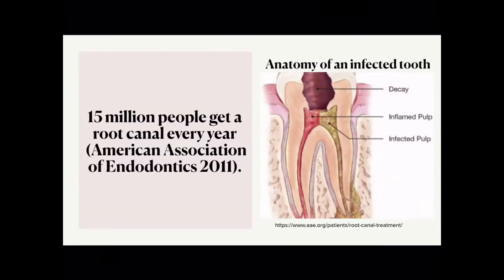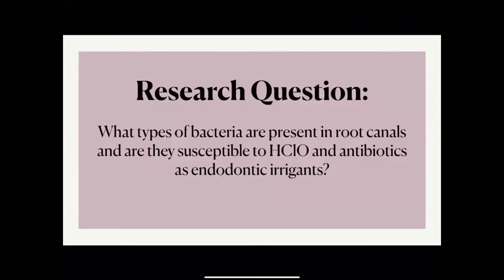This image shows the anatomy of an infected tooth. Here you can see two different roots — one with infected pulp tissue and the other with inflamed pulp tissue. This is a tooth in need of a root canal. My research question is: what types of bacteria are present in root canals, and are they susceptible to hypochlorous acid and antibiotics as endodontic irrigants?